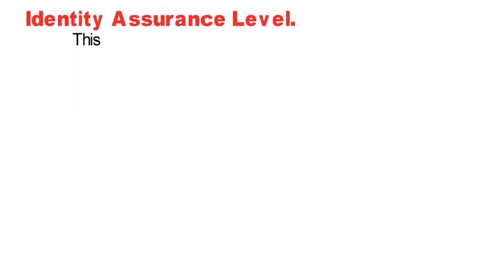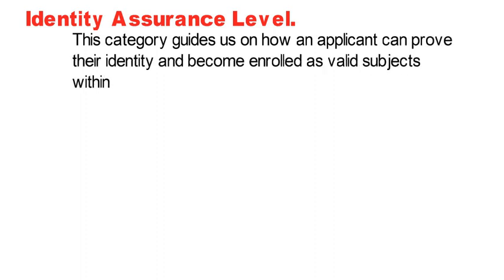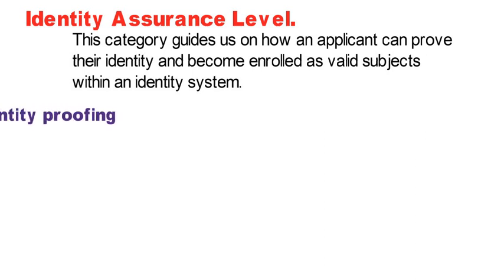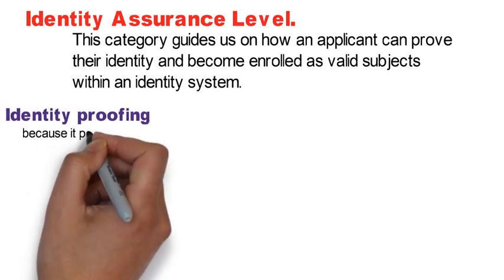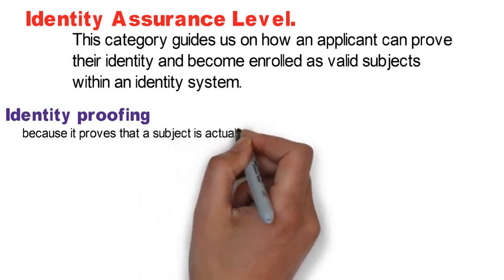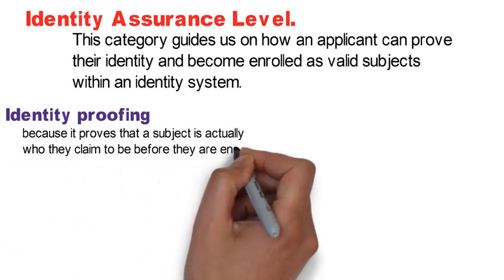IAL stands for Identity Assurance Level. This category guides us on how an applicant can prove their identity and become enrolled as a valid subject within an identity system. This validation process is referred to as identity proofing, because it proves that a subject is actually who they claim to be before they are enrolled.